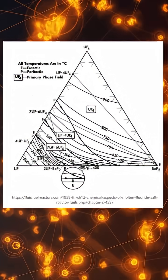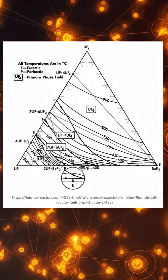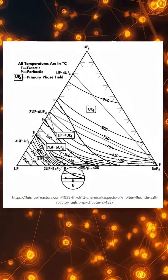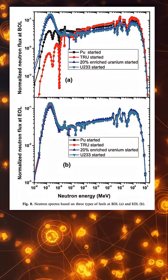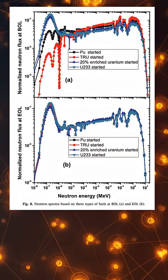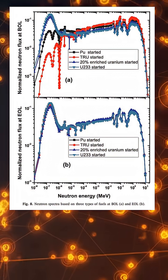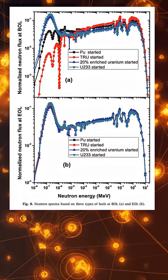A surrounding blanket of lithium and beryllium fluoride helps control neutron flow while reducing unwanted nuclear reactions. As uranium atoms undergo fission, released neutrons strike thorium atoms, gradually converting thorium into uranium-233 while the reactor continues running.